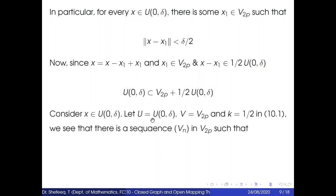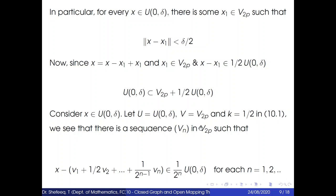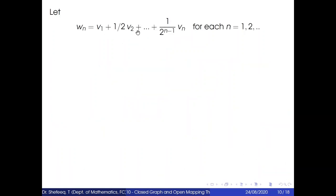Consider x belonging to U(0, δ). Let U = U(0, δ), V = V₂p, and k = 1/2 in Lemma 10.1. We see that there is a sequence vn in V₂p such that x − (v₁ + (1/2)v₂ + ... + (1/2)^(n−1)vn) belongs to (1/2)^n · U(0, δ) for each n = 1, 2, 3, etc. We define wn = v₁ + (1/2)v₂ + ... + (1/2)^(n−1)vn for each n. Since the norm of x − wn is less than or equal to δ/2^n, which converges to 0, wn converges to x in X.